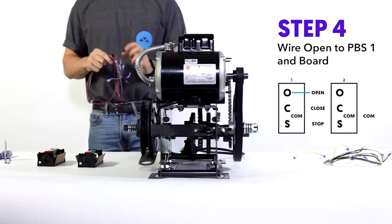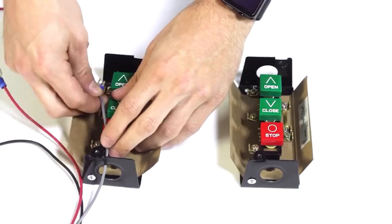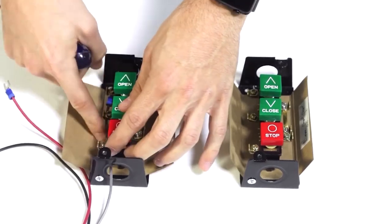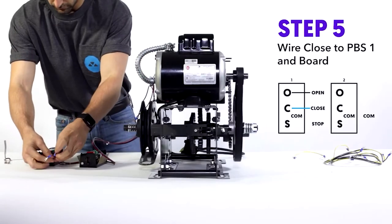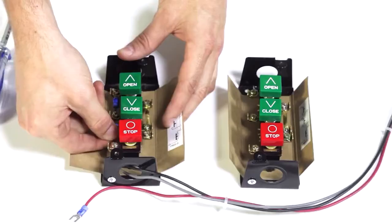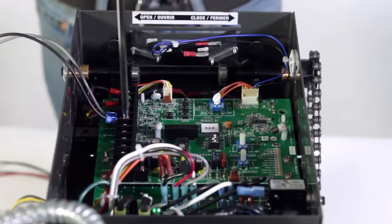Now you're ready to start wiring. So step four, wire open on push-button one to open on the logic board, just like this. Step five, same thing, close on push-button one to close on the logic board.